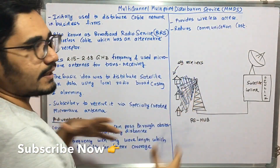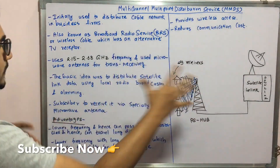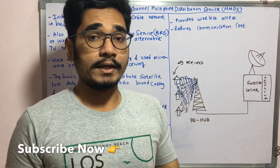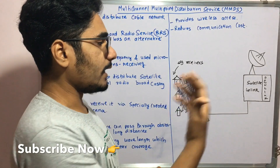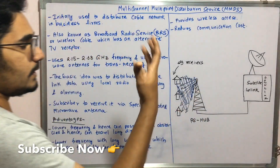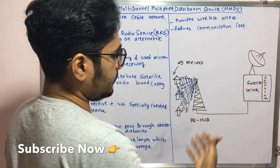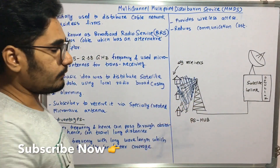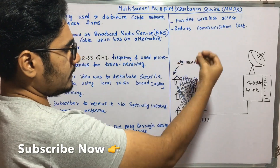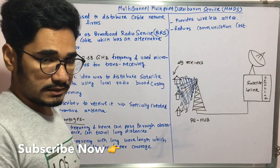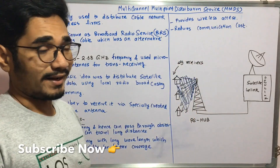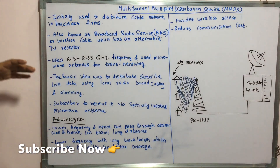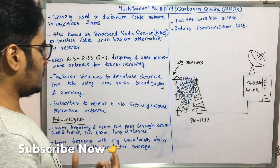The basic setup of MMDS is as follows. The idea is to distribute satellite data. A satellite has two kinds of links — a satellite uplink and a satellite downlink. The satellite uplink data needs to be transmitted to each of the signal receivers. This is done by means of an RS hub, which is a broadcasting station, and with the help of the RS hub the microwaves are transmitted to each individual signal receiver.